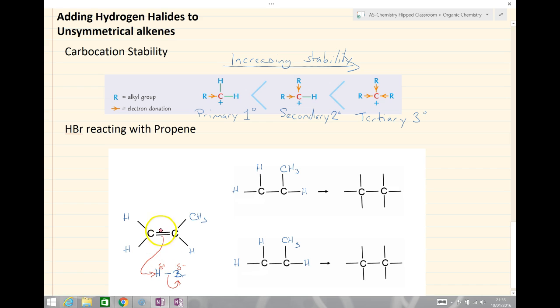But this propene, now if we look, splitting that carbon-carbon double bond in half, is now unsymmetrical. On the left-hand side, we have hydrogen-hydrogen, while on the right-hand side, we have a methyl group and a hydrogen. And what that means is there's two possibilities of intermediates.